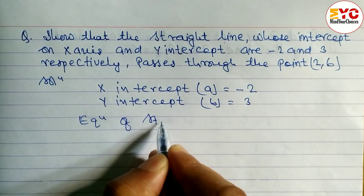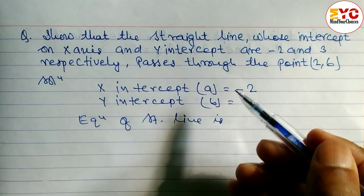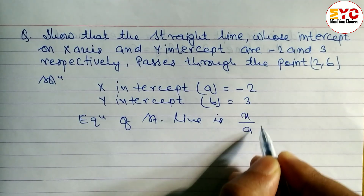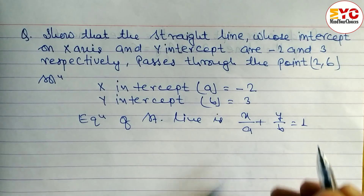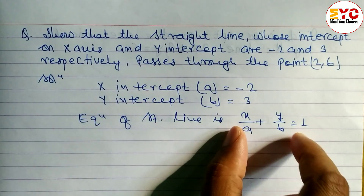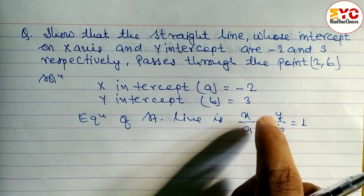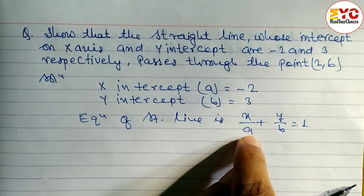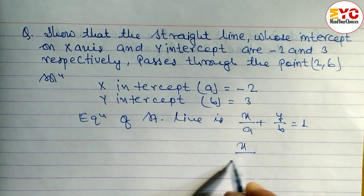To find the equation of a straight line when intercepts are given, you have to use the double intercept formula. The double intercept formula is x/a + y/b = 1. Always when intercepts are given, use this formula.